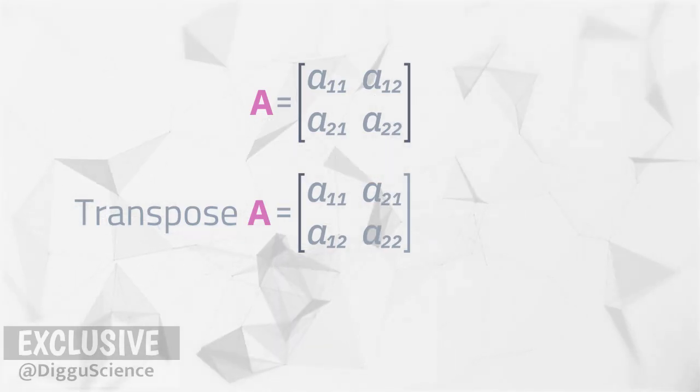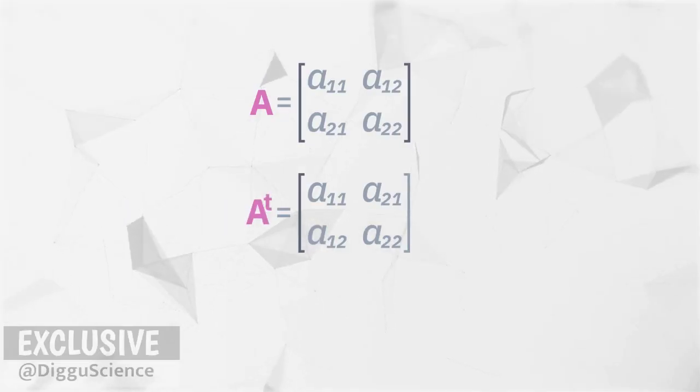This is the transpose of matrix A. To distinguish it from the original matrix, there is a superscript T on the symbol A on the upper right side.